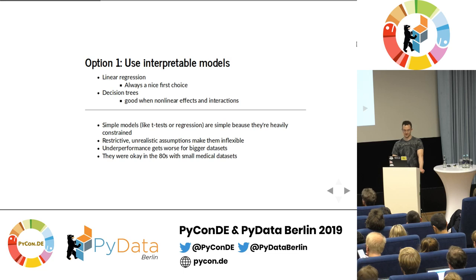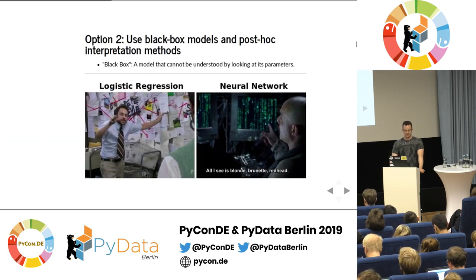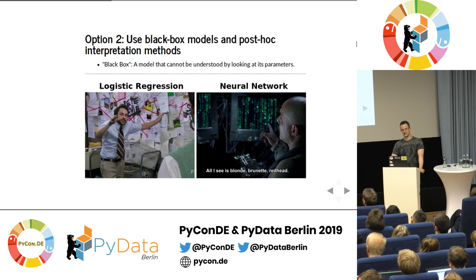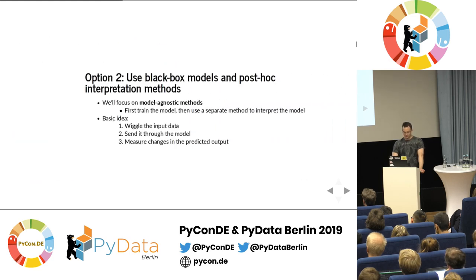Interpretable models used to be good back in the eighties when datasets were small. They're still good in smaller examples — like a medical study with 30 people on a placebo and 30 on a treatment. But as data grows, the outperformance of a complex model gets bigger. So the better option is the second one: use a complex black box model — we call them black box because we can't understand them by looking at the parameters. For example, a neural network you can't explain unless you are Cipher from The Matrix.